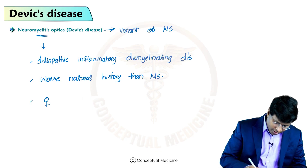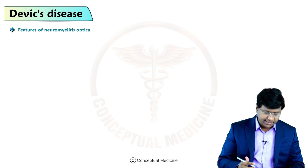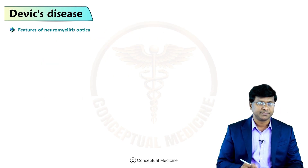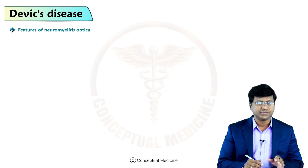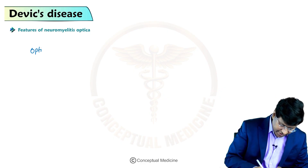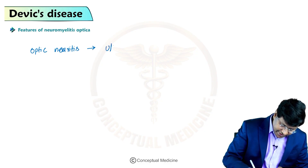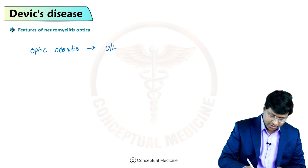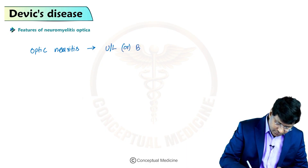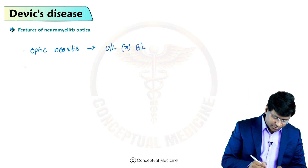Neuromyelitis optica is more common in females rather than males. The features of neuromyelitis optica include optic neuritis, which is one important feature. This optic neuritis is either unilateral or bilateral.